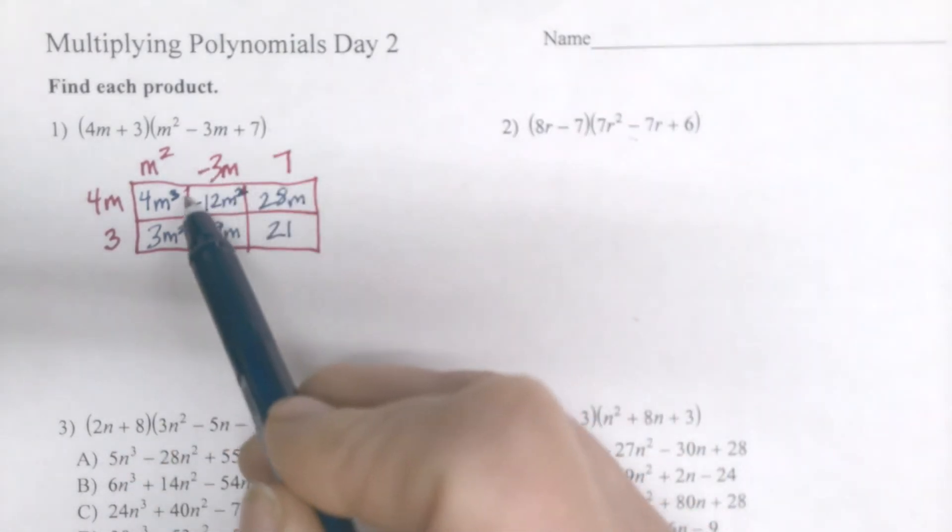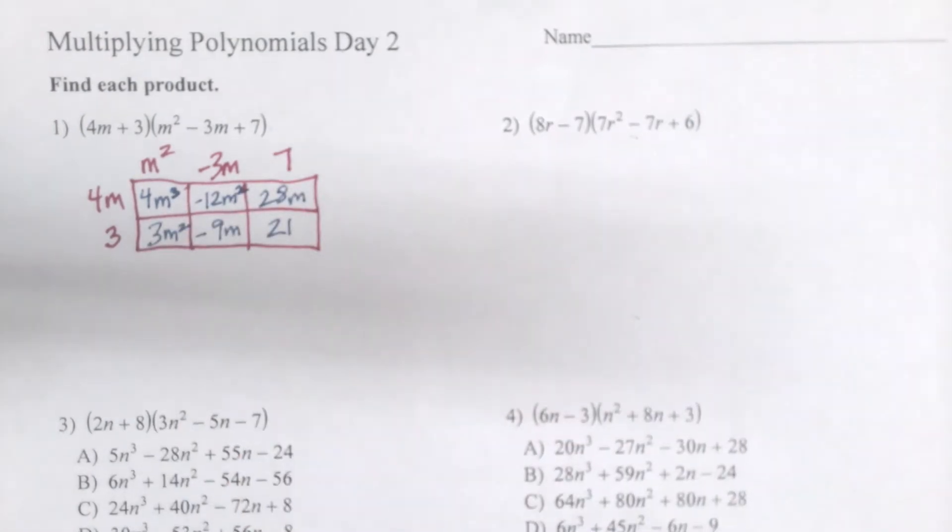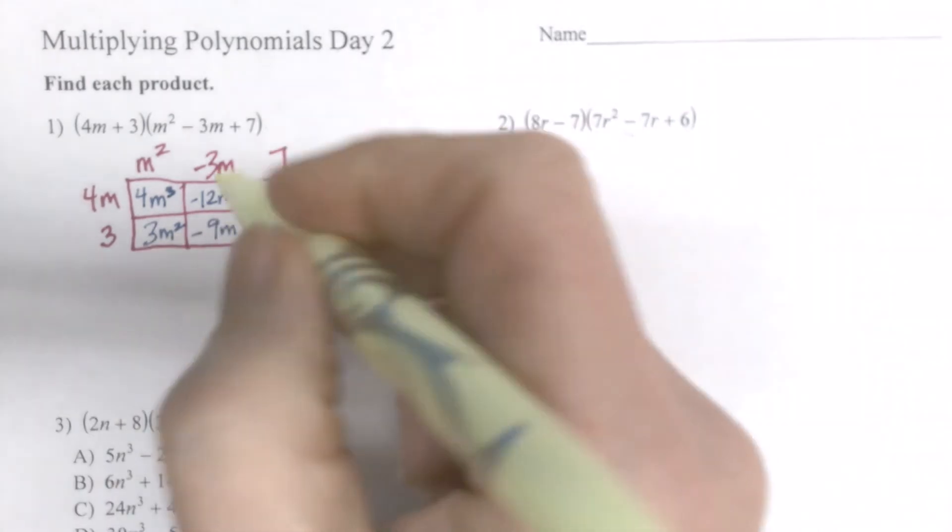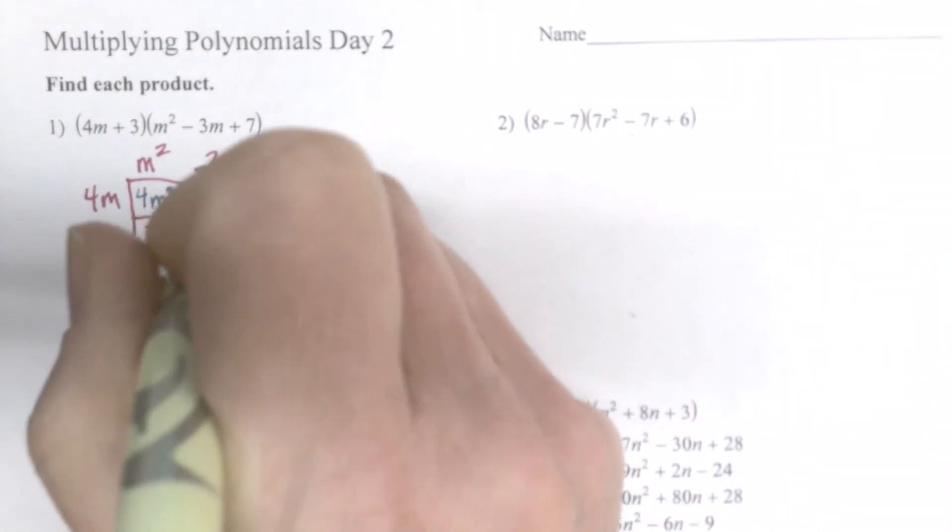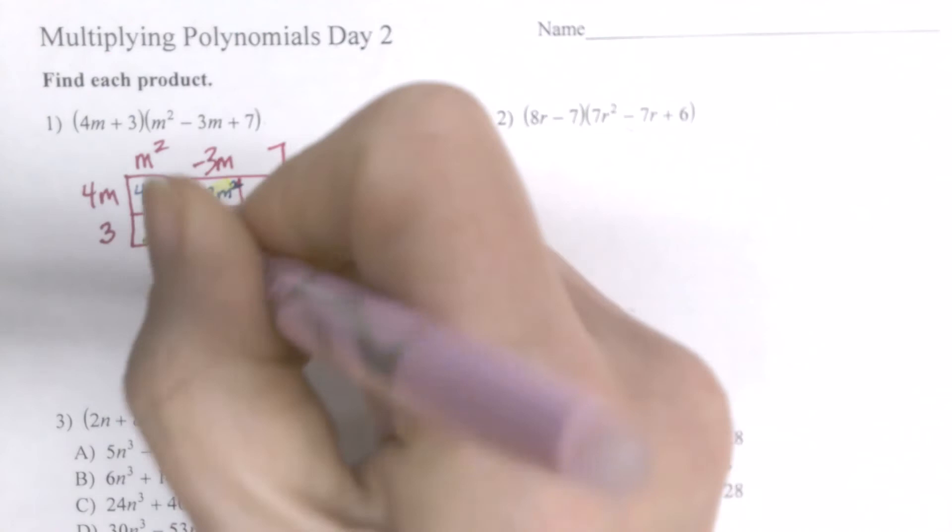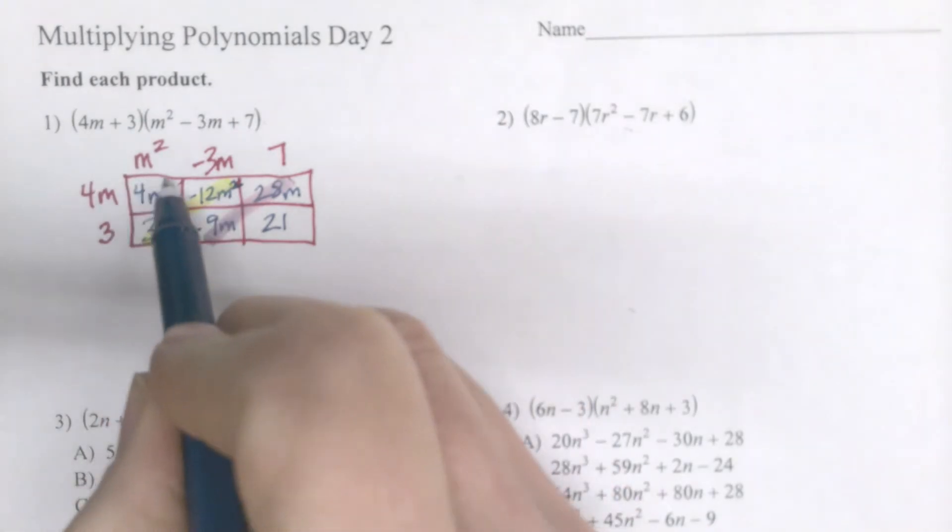Now I want to look diagonally down. If you notice, I'll do some highlighter on this. These two are like terms. And if I grab another highlighter in a different color, diagonally, these two are like terms as well.